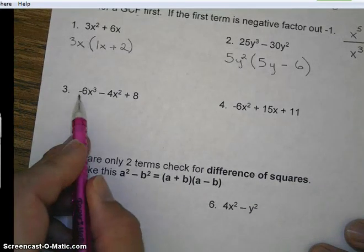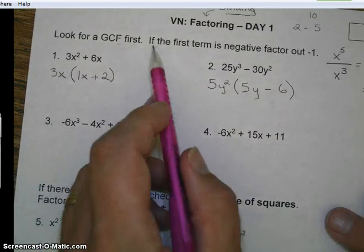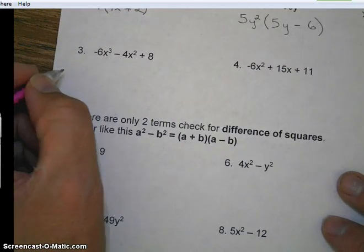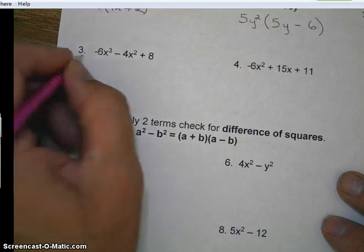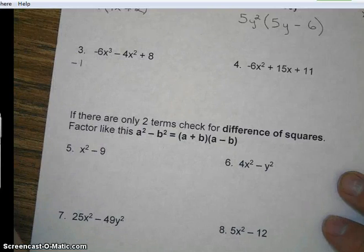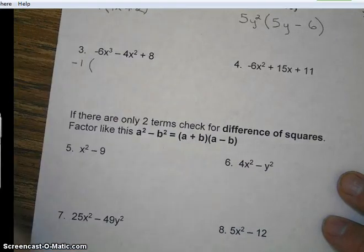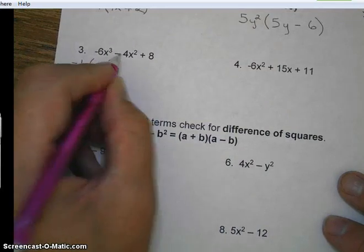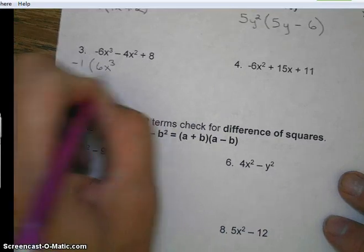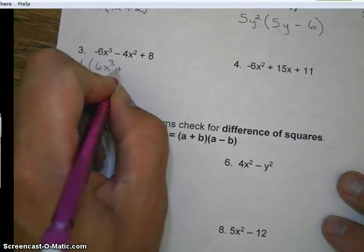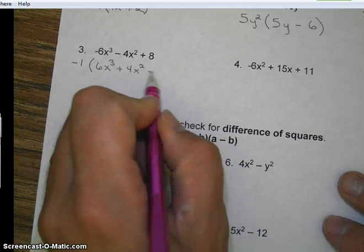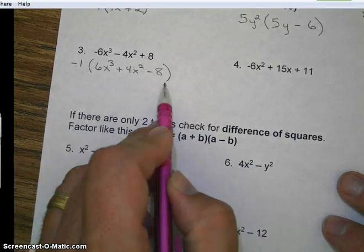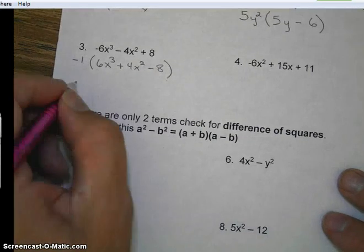Let's take a look at number three. Now, notice it begins with a negative. Notice what it says up here. If the first term is negative, factor out a negative one. Well, what does factoring mean again? That's right. It means to divide. So we're going to write down the negative one. So divide. Negative six divided by negative one. Negative divided by a negative is a positive. So we're going to have 4x squared. Minus 8. Remember, we're dividing. Now, let's get down to business.